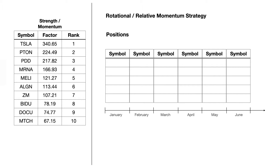At the start of the month we look at this factor, because there's good academic evidence that the strength or momentum of a stock tends to continue. In this case we might decide we're going to trade the top five stocks each month — that would be Tesla, PDD, MRNA, and Melly — and those would be the five stocks we would open a position in.